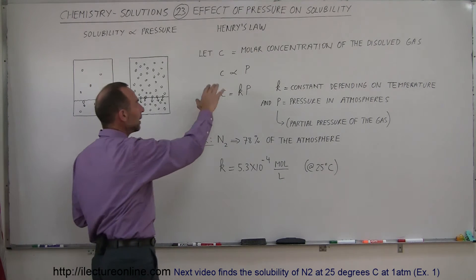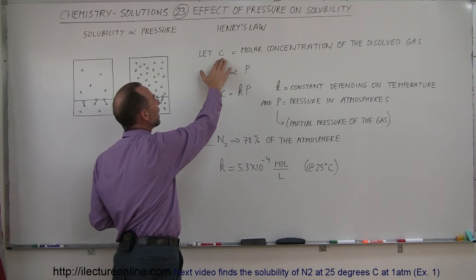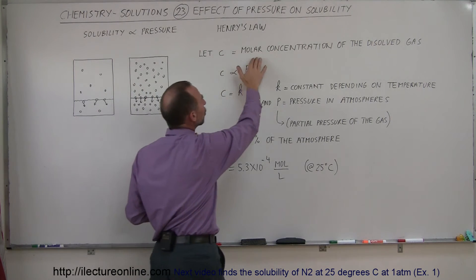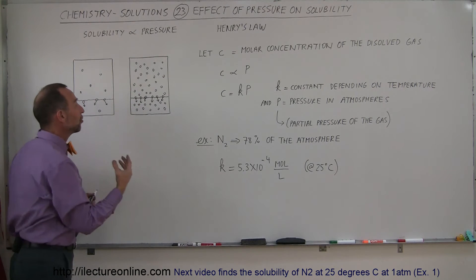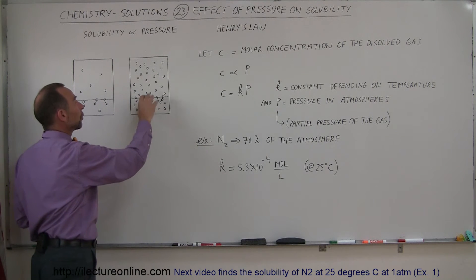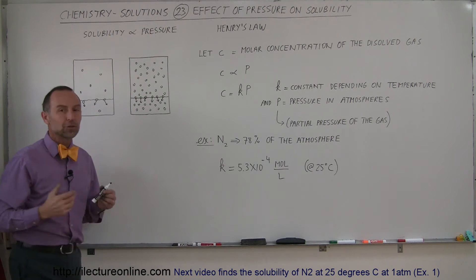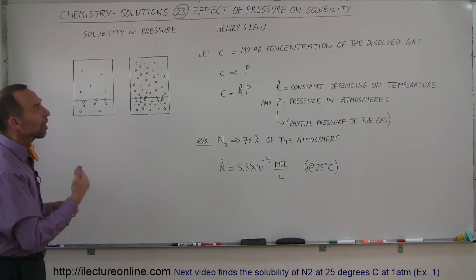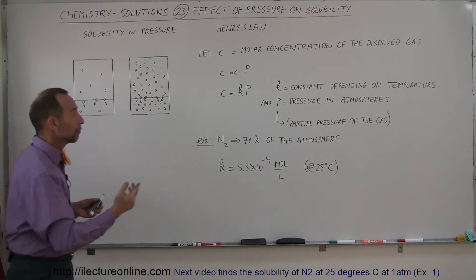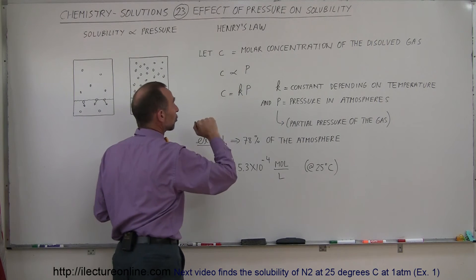Let's put that into an equation. We're going to use C as the molar concentration of dissolved gas. That means C represents the number of moles of gas per liter of solution — the molar concentration of the dissolved gas. So therefore, we can write that the molar concentration C is proportional to the pressure.